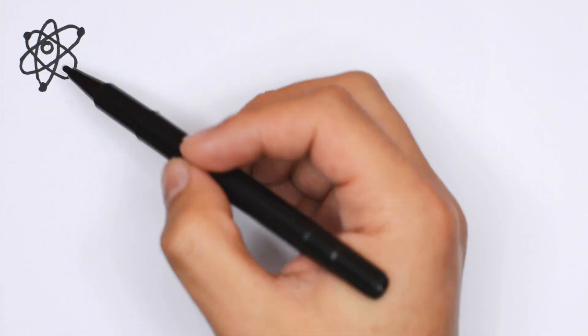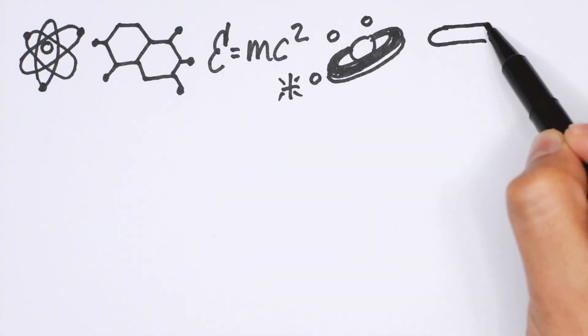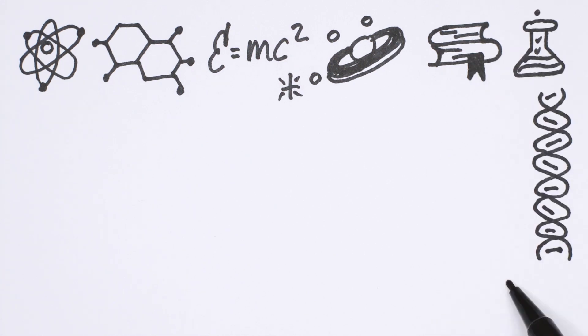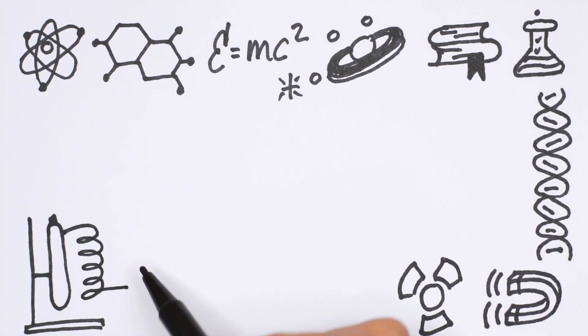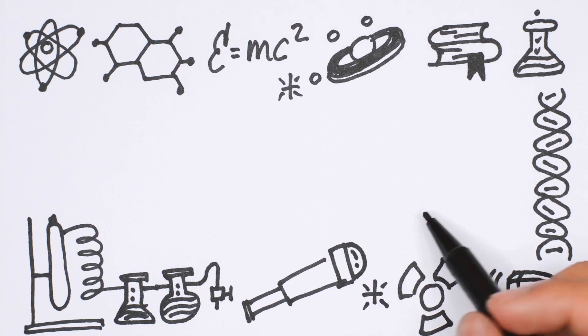Hi everyone and welcome back to ThinkScience where today we will be continuing our series on cellular respiration. Today we're going to be talking about pyruvate oxidation and the Krebs cycle.